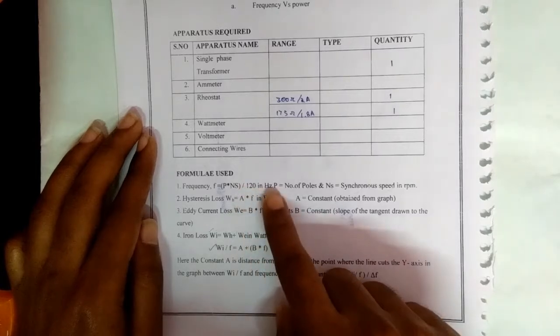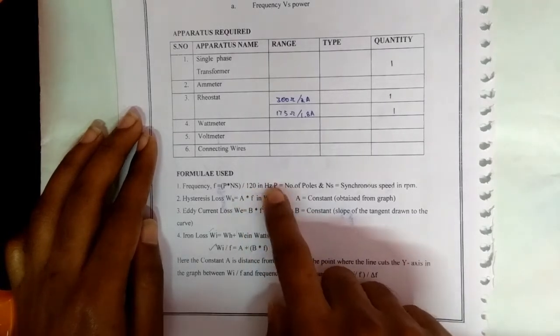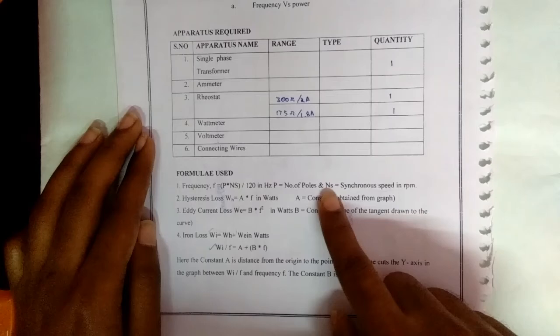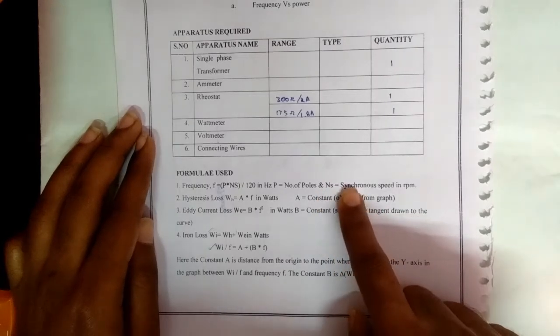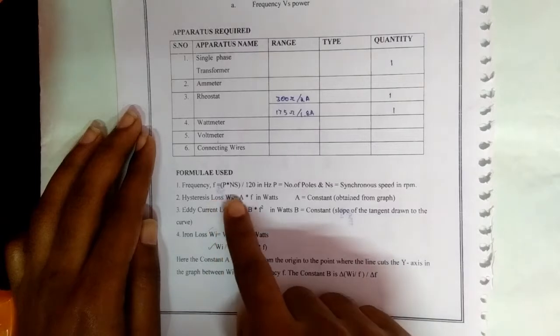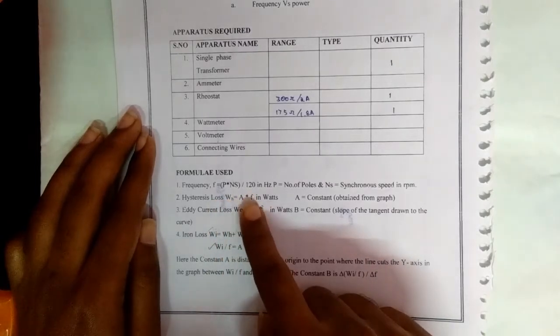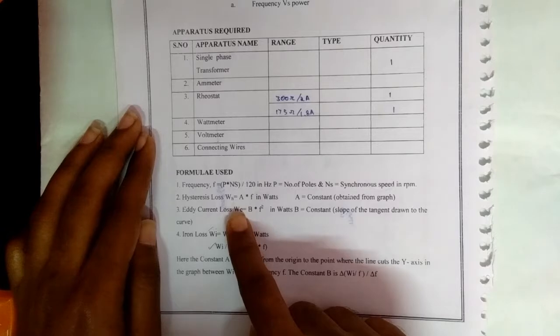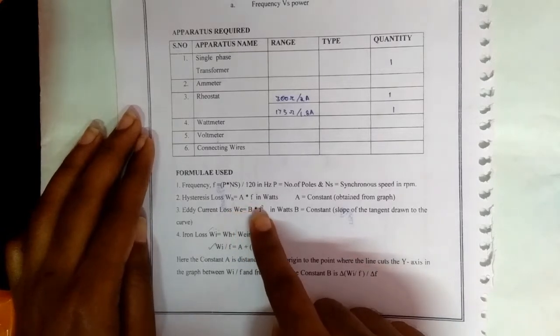And hysteresis loss wh is equal to a into f, and eddy current loss we is equal to b into f squared. So the a and b are obtained from the graph.